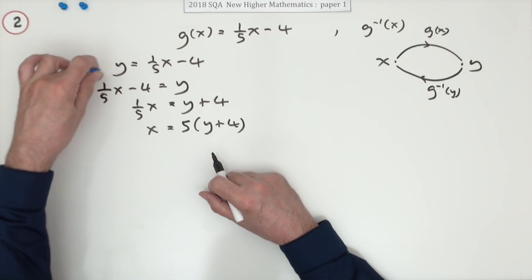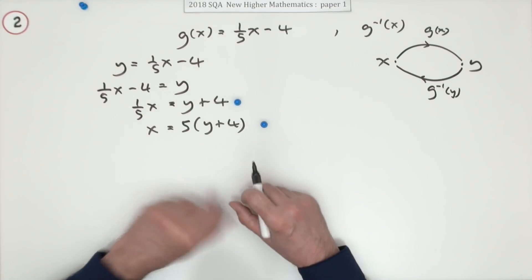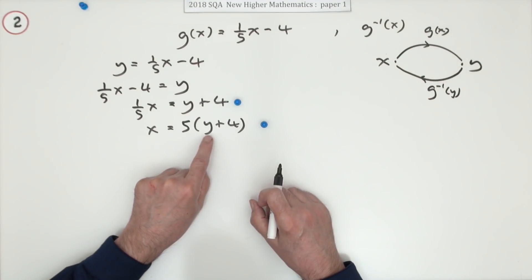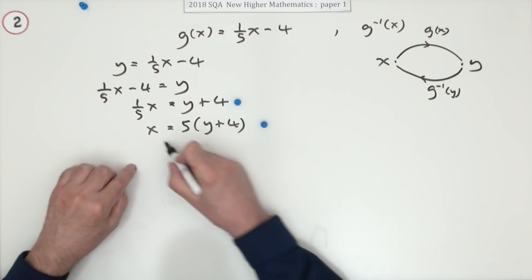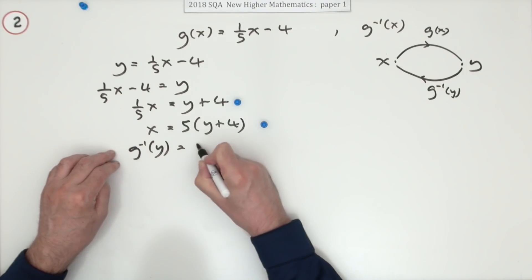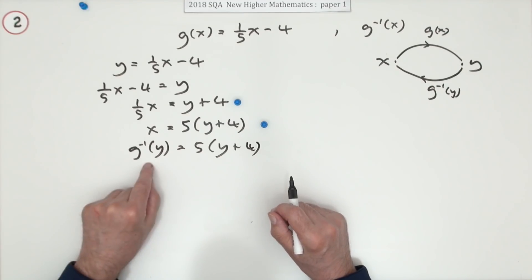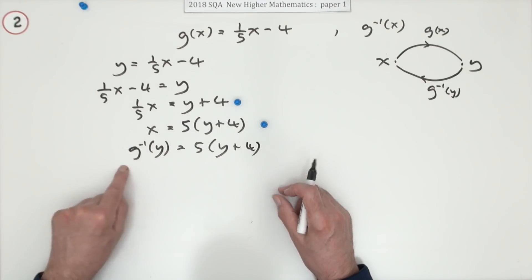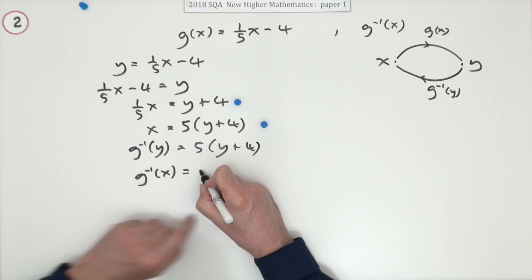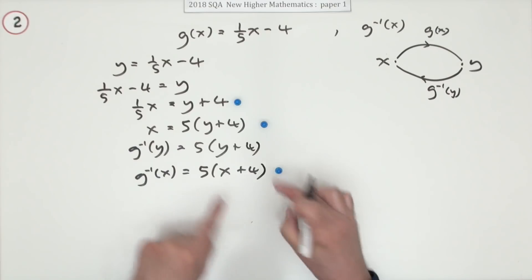The first mark should really have been for making this kind of statement but it's not, it's when you start to rearrange it and then when you finish rearranging it. Now notice the variables - this one's g(x) but that's got a y as the independent variable. Strictly speaking what that line should read is: the inverse function acting on y is five times y plus four, because it's y that's being fed in.